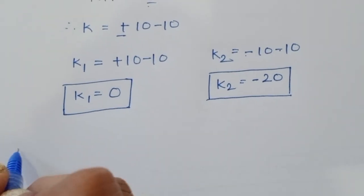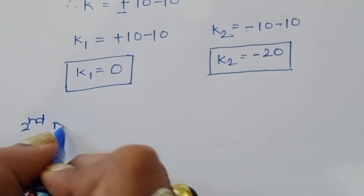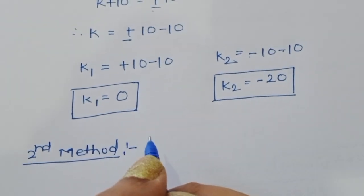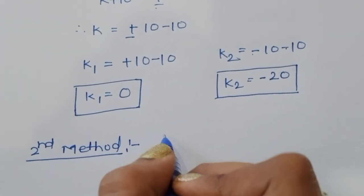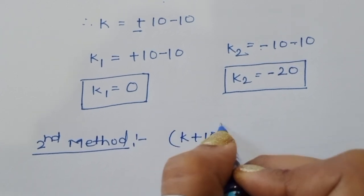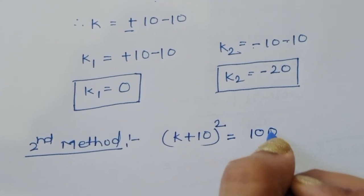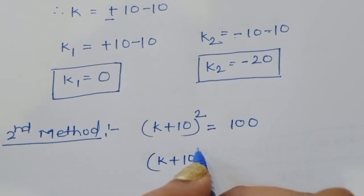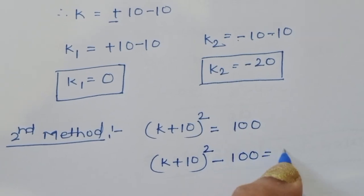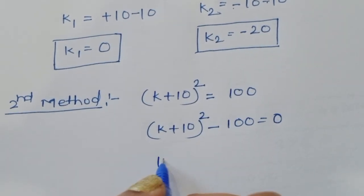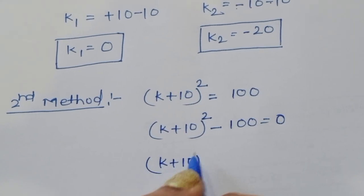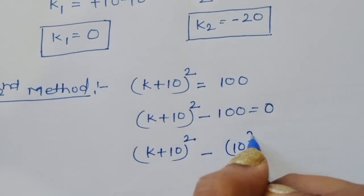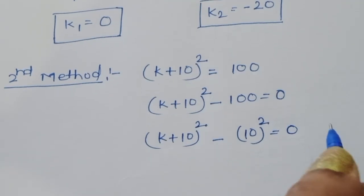Now we solve the same equation using a second method. We start with (k + 10)² = 100, and rewrite it as (k + 10)² - 100 = 0. Since 100 = 10², this becomes (k + 10)² - 10² = 0.